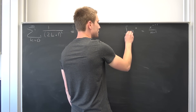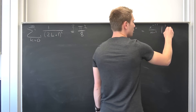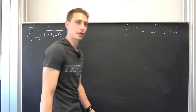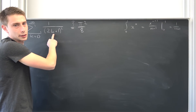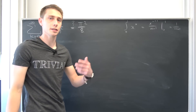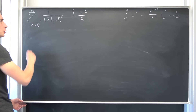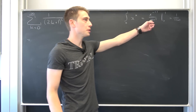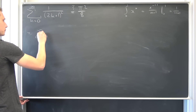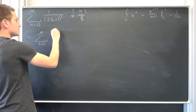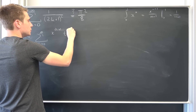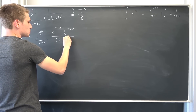If you evaluate this from 0 to 1, you basically get 1 over n plus 1. Now, we have 2k plus 1 squared down here — that's 2k plus 1 times 2k plus 1. Interpreting this as polynomials being integrated, we're going to get an infinite sum of x to the 2k plus 1 power times t to the 2k plus 1 power over 2k plus 1 squared.